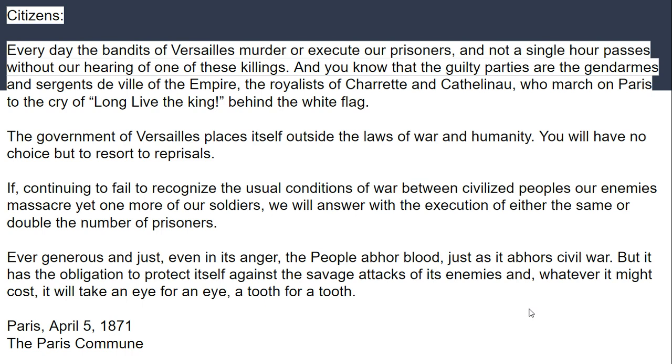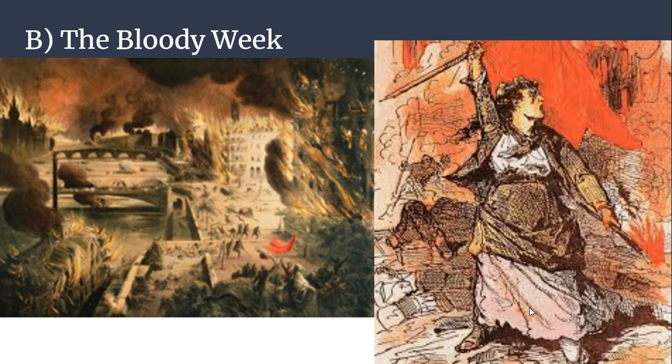In what's called the Bloody Week, the forces of the Third Republic storm the city of Paris, driving out the communists, re-seizing control of the city, and leading to substantial destruction as a large part of Paris burns down — either from communists setting fire to buildings or from French soldiers attacking the city; accounts differ. Tons of people are killed, and the Third Republic re-establishes itself and retakes the city of Paris. That's the Bloody Week — a massive setback for the communists, destruction of the Paris Commune, and France is substantially weakened, but ostensibly still a nation-state.